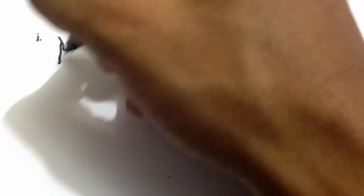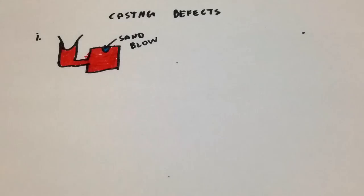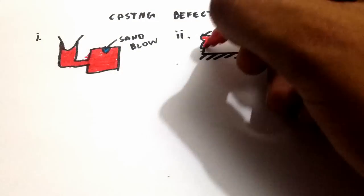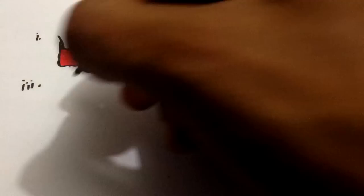Next in line are casting defects and remedies. Caused due to a single manufacturing fault or a combination of many. The first in the list are blow holes caused due to excess moisture in the moulded sand and can hence be controlled by regulating moisture. Second is porosity. It occurs due to the presence of gas in metal and can be controlled by regulating pouring temperature.